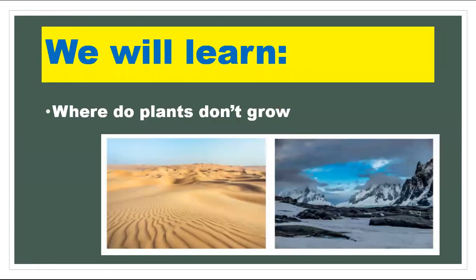Now look at these pictures. This is a desert — in this desert you cannot see any plant. There is no plant. The big reason, the big problem, is there is not much water for plants, so they cannot grow in this desert.